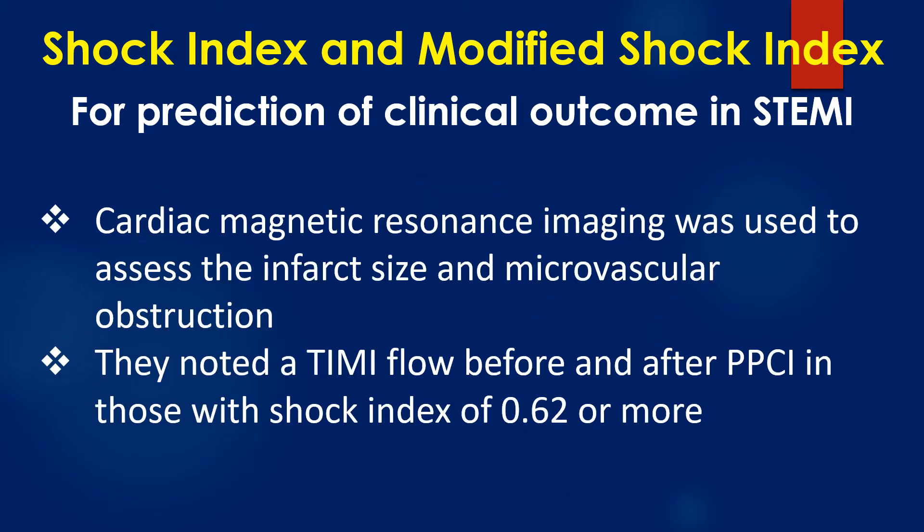Cardiac magnetic resonance imaging was used to assess the infarct size and microvascular obstruction. They noted a worse thrombolysis in myocardial infarction flow before and after primary coronary intervention in those with a shock index of 0.62 or more.